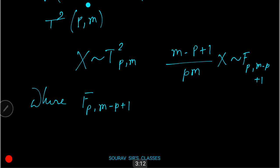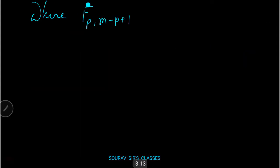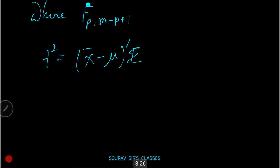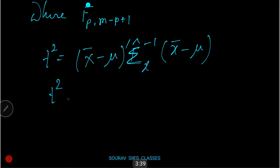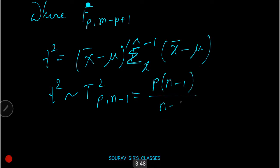Hotelling's T-squared statistic is defined as T² = (x̄ − μ)ᵀ Σ̂⁻¹ (x̄ − μ). From the distribution we can write T²(p, n−1) = p(n−1)/(n−p) · F(p, n−p), where F(p, n−p) is the F-distribution with parameters p and n−p. To calculate a p-value, divide the T-squared statistic by this fraction and use the F-distribution.